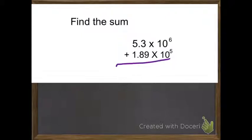So, what you're going to do is find what's different. Because the exponents are different, you have to make sure they're equal. So, 6 is not equal to 5.